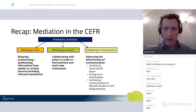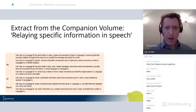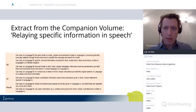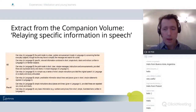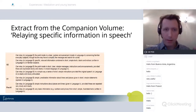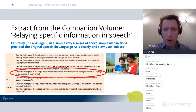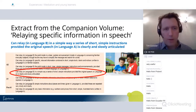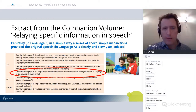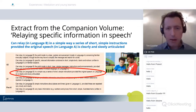Creating a space for that in a group is an acceptance of the different perspectives brought to that group situation — but it can also be acting as an intermediary and facilitating communication and disagreements. So the traditional dictionary definition of mediation is encapsulated in there, but it's only one part. This is a much broader concept that the CFR is offering us. Here's an extract from the companion volume: the scale for relaying specific information in speech, and at A2 we've got 'can relay in language B in a simple way a series of short, simple instructions, provided the original speech in language A is clearly and slowly articulated.'